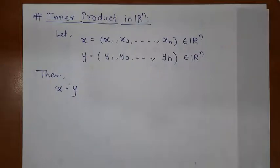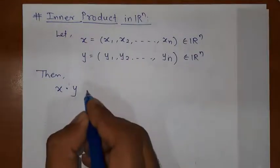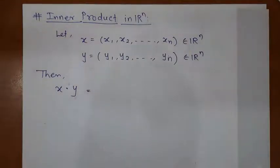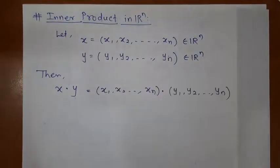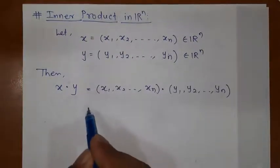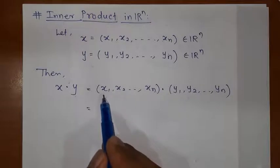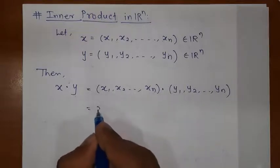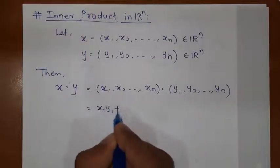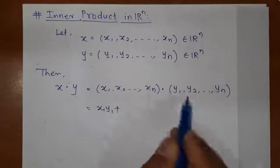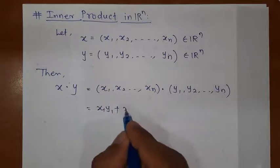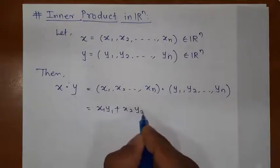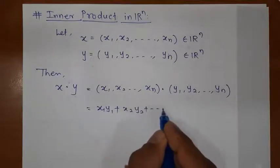Some people call it the dot product also — X dot Y. I am going to take the inner product. The dot product is component-wise multiplication: X1 into Y1, plus X2 into Y2, and so on.